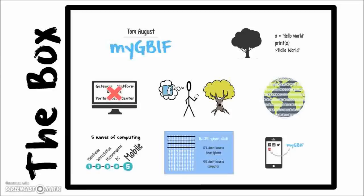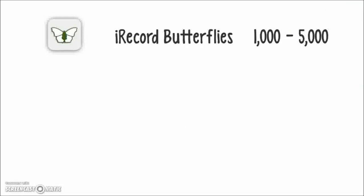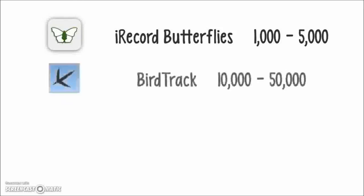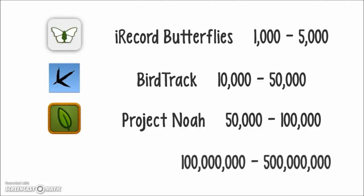So what do I mean by thinking outside the box? We don't want to reinvent the wheel. There have been loads of really great mobile apps developed for wildlife — for example, iRecorder Butterflies with 1,000 to 5,000 downloads on the Android store, or BirdTrack with 10,000 to 50,000. Or even Project Noah, a great project involving young people and getting them excited about wildlife. But I think we need to think even higher — how about an app that has 100 million to half a billion downloads? So the app I decided to build on was Twitter.